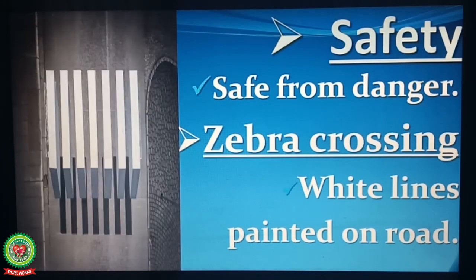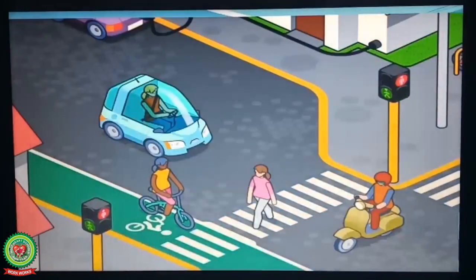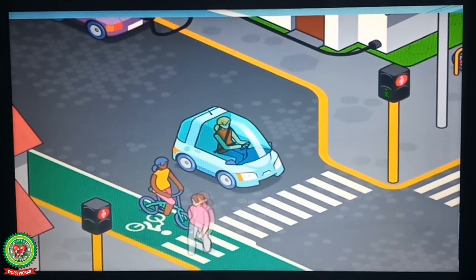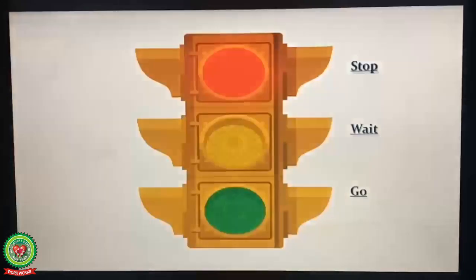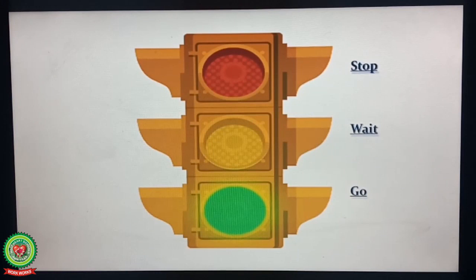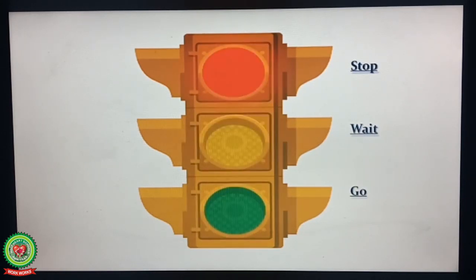Now children, I would like to discuss about traffic lights. Number one is red light — red light indicates to stop. Number two is yellow light — yellow light indicates to wait. Number three is green light — green light indicates to go.